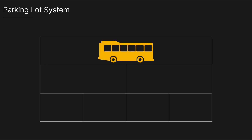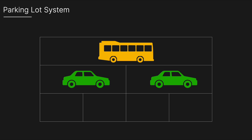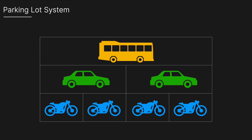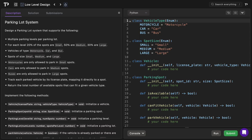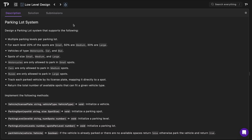In this video we're going to be looking at a common low-level design coding question which is to design a parking lot system. So let's jump in. Here we have the description on the left and the code on the right and we're going to dive into that deeper in a second, but right now we're going to focus on the description first to get a clear idea of what's required.